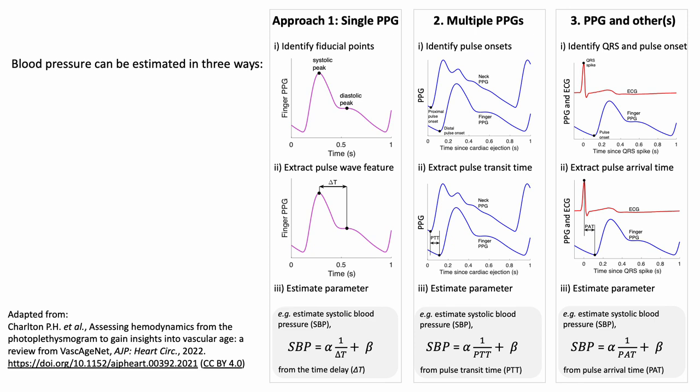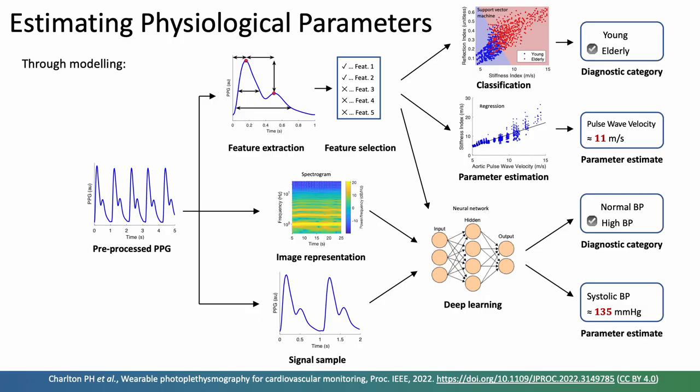So here I've shown one approach to modelling, that's converting a measurement into a physiological parameter. There are a few different approaches that have been taken for this step in the literature, and so this diagram summarizes different approaches to get from a pre-processed PPG signal on the left through to either a diagnostic category or an estimate of a physiological parameter on the right. So at the top is the traditional approach of extracting features, selecting the best features, and then using these either for classification shown with the support vector machine here.